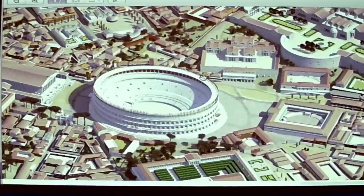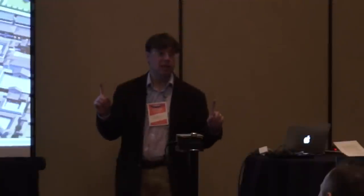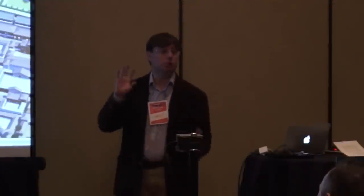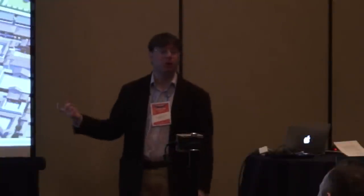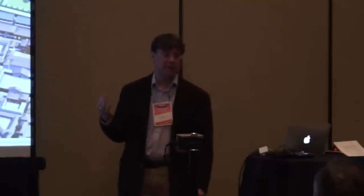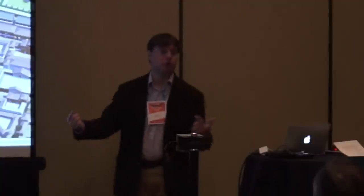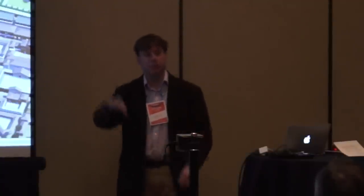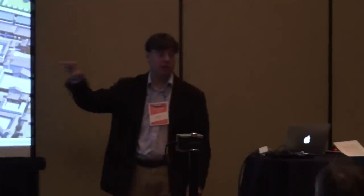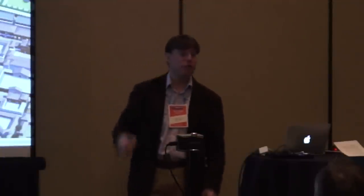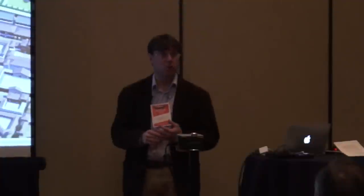For high polygon count elements like columns, I handle those in Cinema 4D using render instances. I bought a commercial pack of Corinthian, Ionic, and Doric columns — one Corinthian column is about 50,000 polygons, and a building with 200 of them shoots up the polygon count enormously. So I tend to handle those iterated, heavy-duty components over in Cinema 4D.